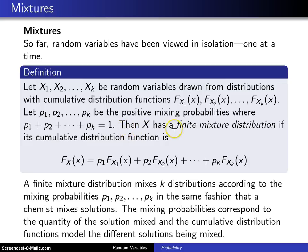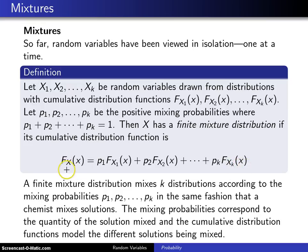Then a finite mixture distribution has cumulative distribution function Fx(x) = p1 * Fx1(x) + p2 * Fx2(x), all the way up to pk * Fxk(x). This is the CDF of the mixture of those k individual distributions.